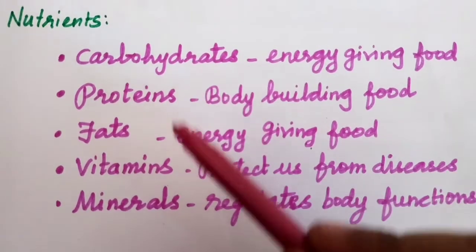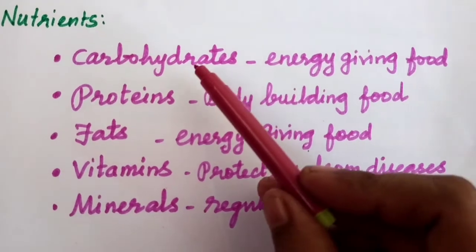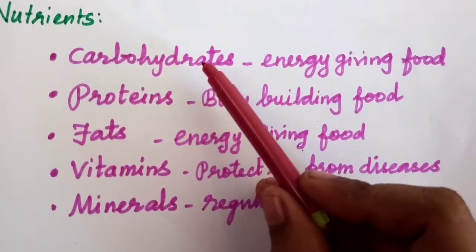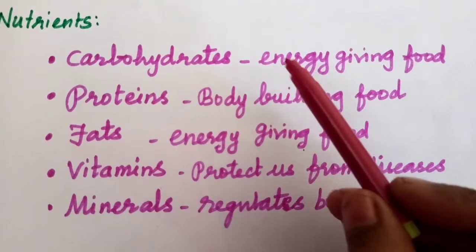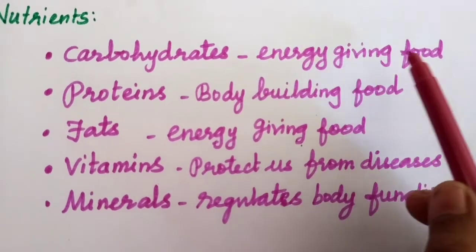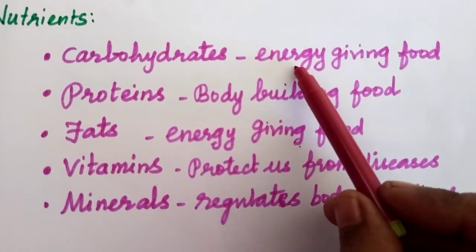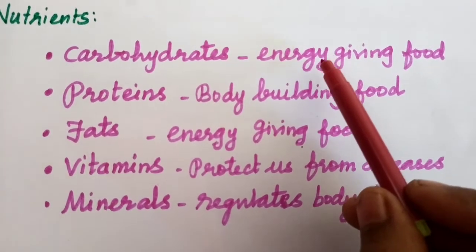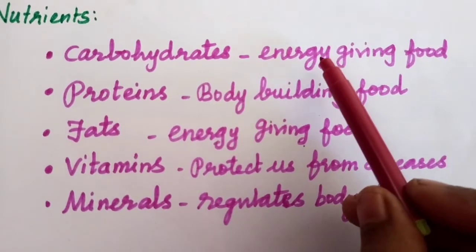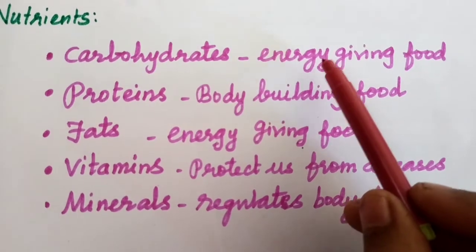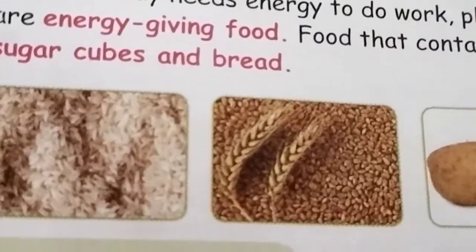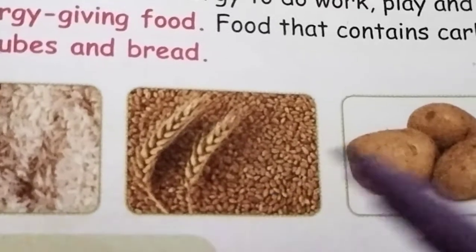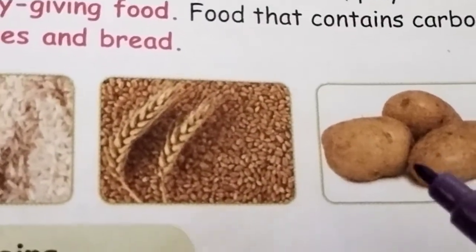Students, the first one is carbohydrates. Carbohydrates is one of the important nutrients. They are called energy-giving food. Why are they called energy-giving food? Because if you eat a carbohydrate food item, it will give us energy. Examples of carbohydrates: rice, wheat, potato, etc.